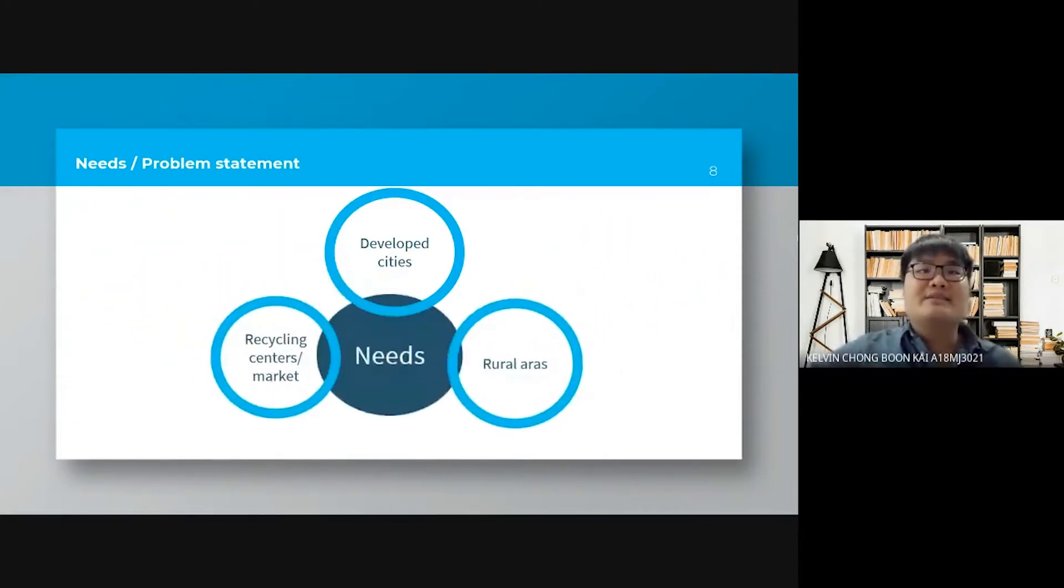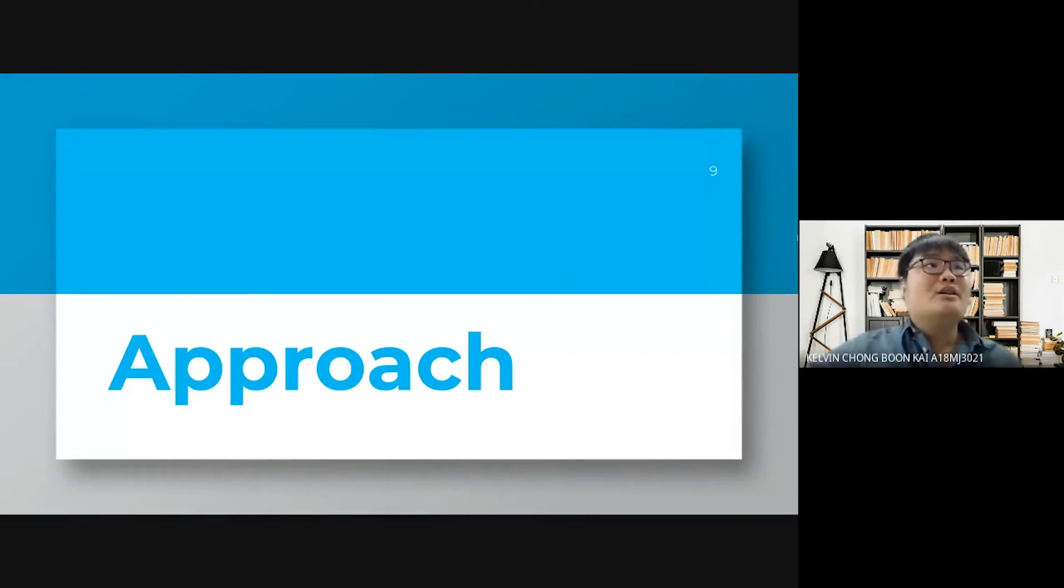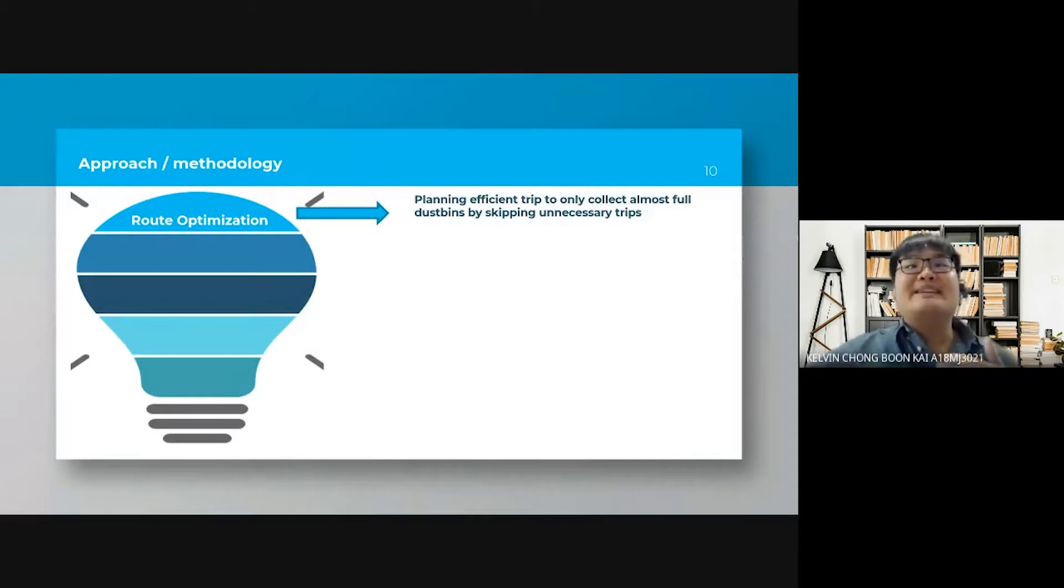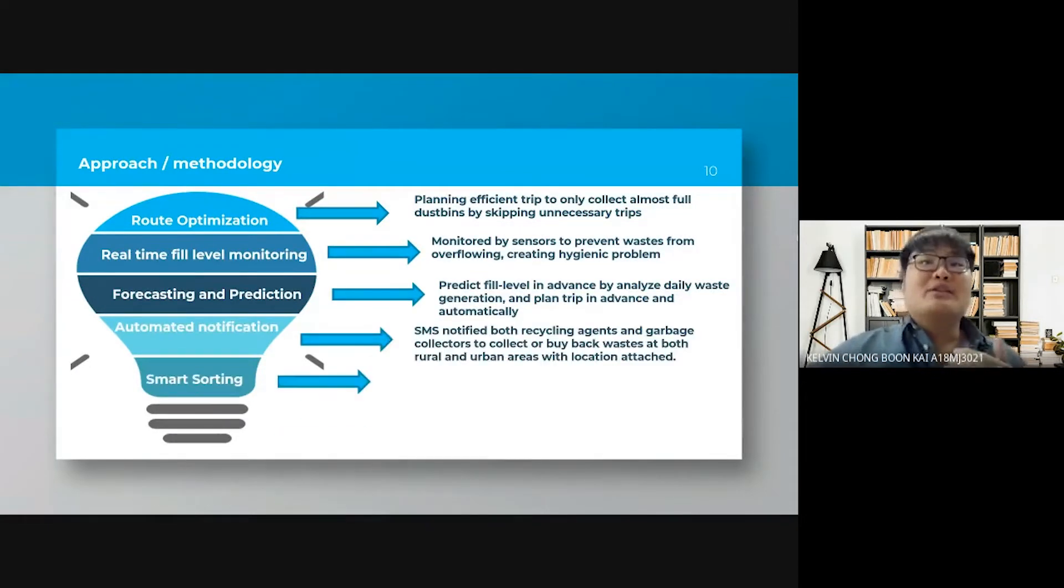To effectively tackle these problems, smart sorting bins is designed. Route optimization helps to effectively plan the trip to collect those only amongst full dustbins by skipping those unnecessary trips.